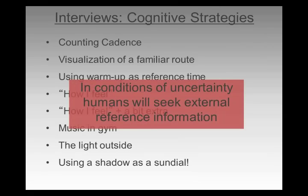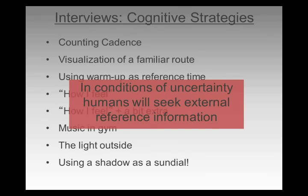The point about this is that when you create uncertainty, when an athlete is in an uncertain condition, they do one thing: they seek out information. That's a tendency that athletes have. When uncertainty increases, what they will try to do is seek out another reference point. It's just human nature.